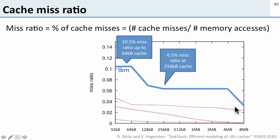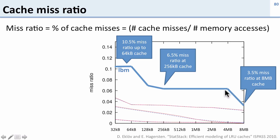If we give LBM even more cache — eight megabytes — the miss ratio goes all the way down to three and a half percent. So what this tells you is that this application's miss ratio depends on how much cache it gets. That's not surprising: the more cache you give an application, the more data it can store in the cache, and the less likely it is to miss, so the miss ratio goes down.